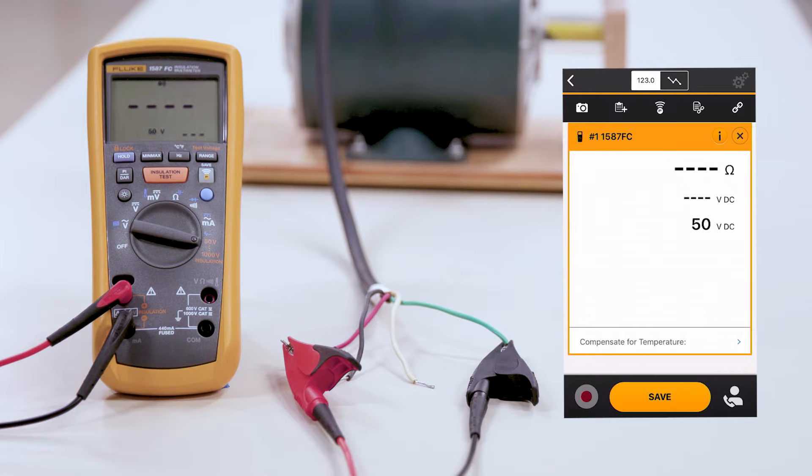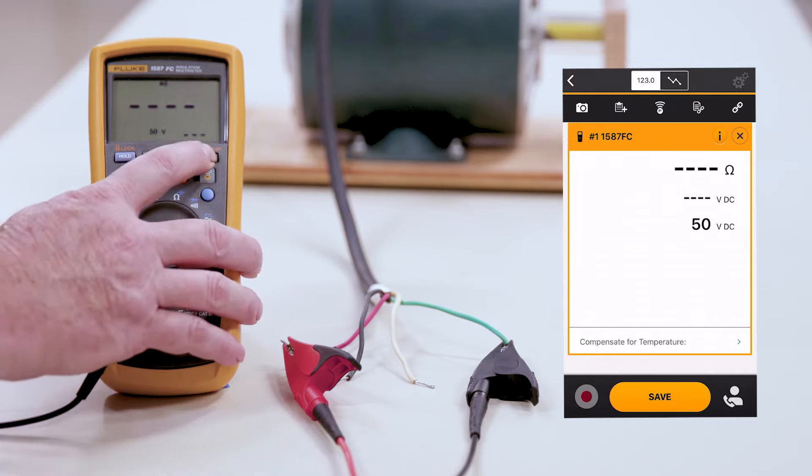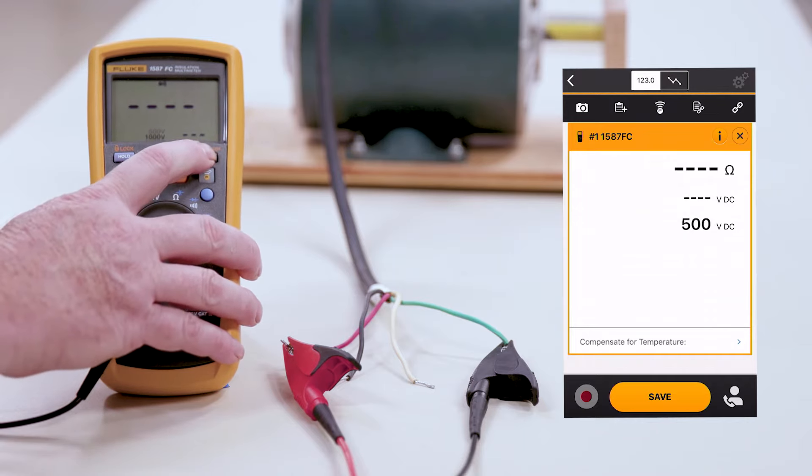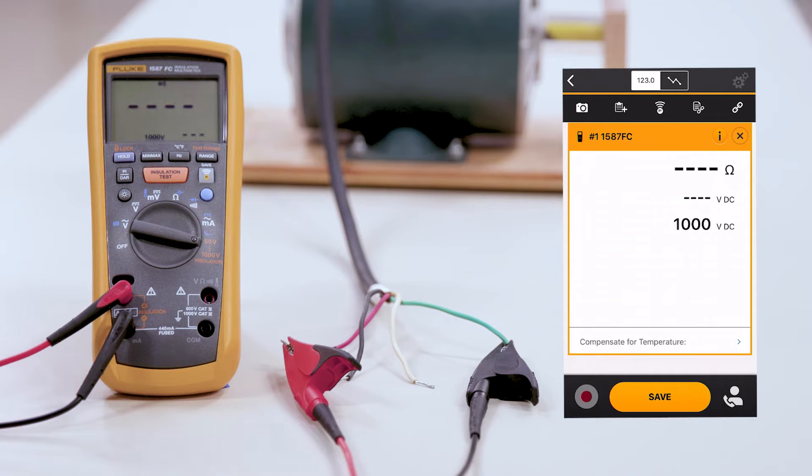By doing that, you'll hit the Range button. Now that we're at the 1000 volt test, we're going to check the windings of our motor to ground.